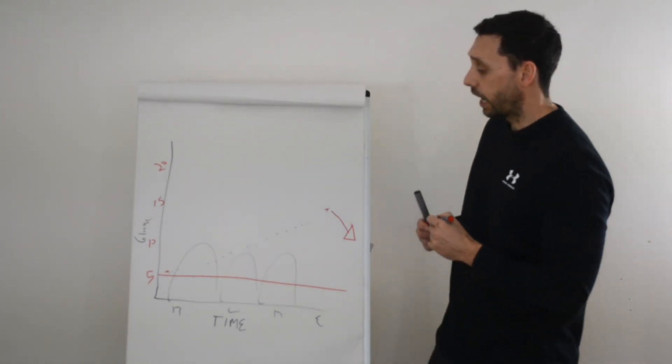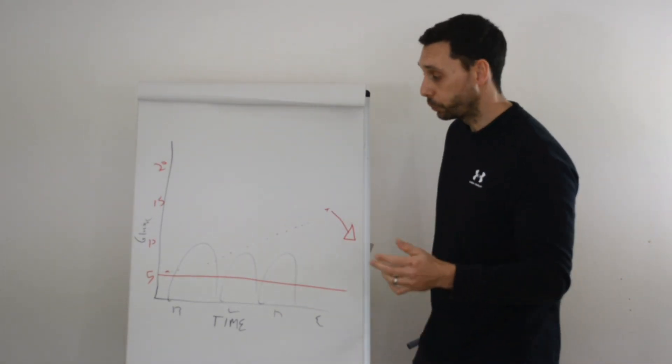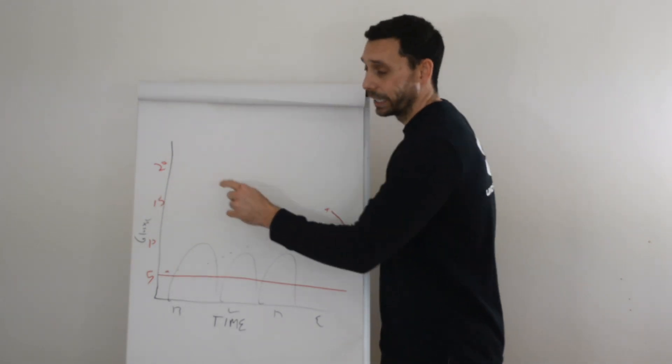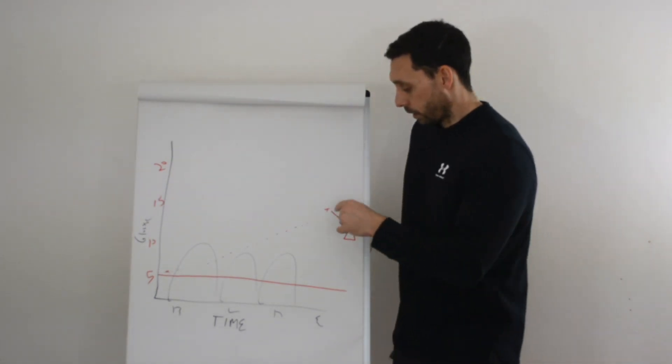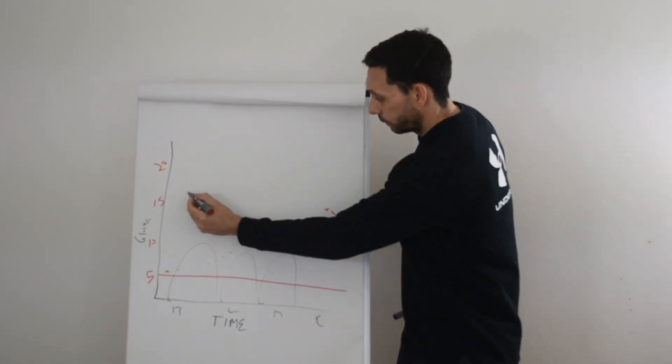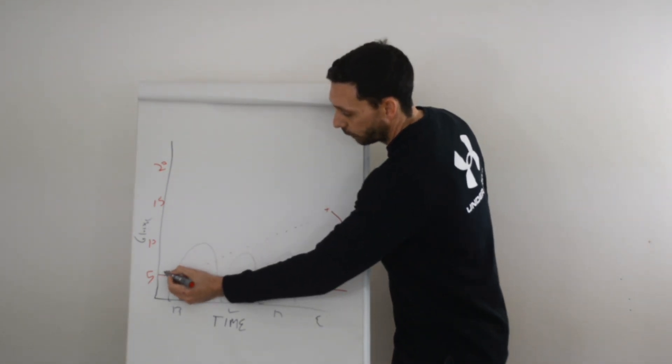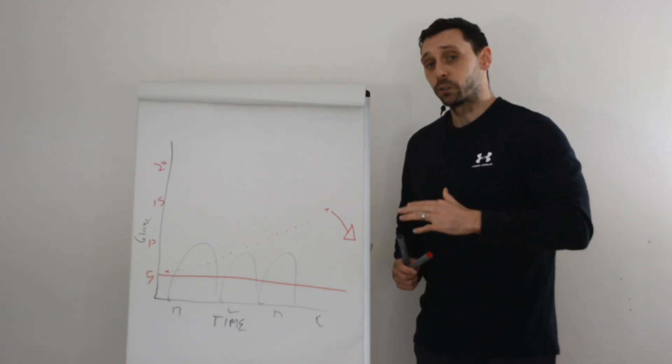If you're watching elsewhere other than the UK, multiply these numbers by 18. That'll give you your readings in the US and in Europe. So then you get this big crash. So let's say you've gone to bed at 15, you're waking up at five or six. That's a big swing.